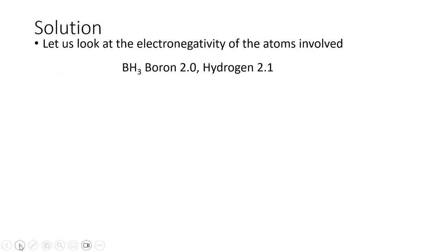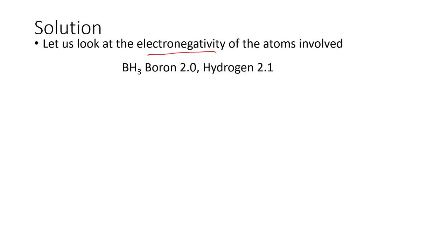Let us look at how to solve the problem. According to the Markovnikov rule, we need to know what is the positive part and the negative part in the molecule that is going to add across the double bond. In the borane molecule, we look at the electronegativity of the atoms involved. Boron's electronegativity value is 2.0 and for hydrogen it is 2.1.